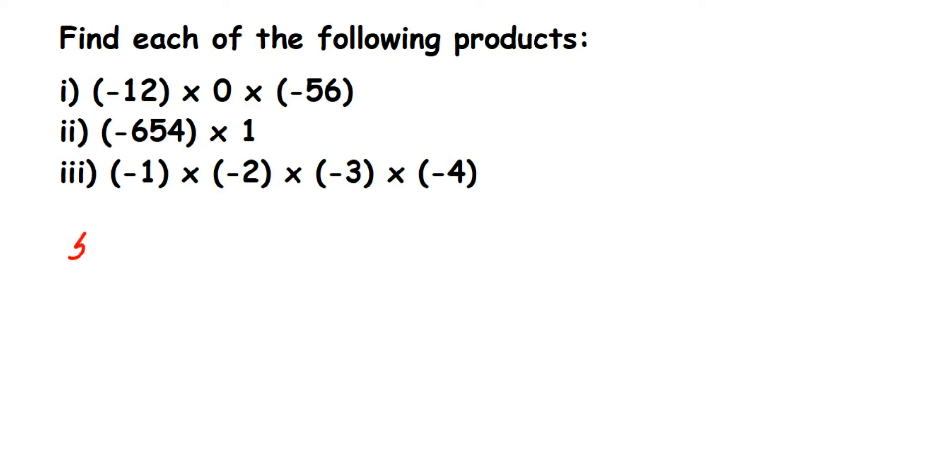The first question here is minus 12 multiplied by 0 multiplied by minus 56. I don't have to multiply here. Why? Because we have a 0. Whenever you multiply any number with 0, your answer will be 0. Though there are hundred numbers or 99 numbers, doesn't matter. If you're multiplying any number with 0, the final answer will always be 0. So this will be equal to 0.